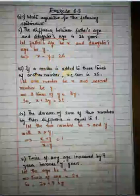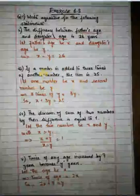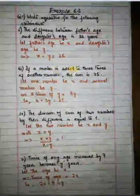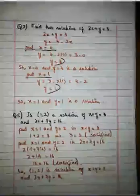Considering part number three: if a number is added to three times of another number, the sum is 25. Both numbers are unknown, so suppose one number to be x and the second to be y. Three times the second number y is 3y. If the first number x is added to three times the second number, the sum is 25 — so the equation is x plus 3y equals 25. On the same lines you can do the remaining parts of this question.